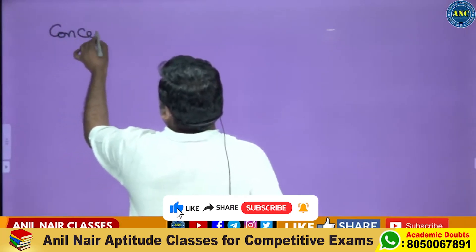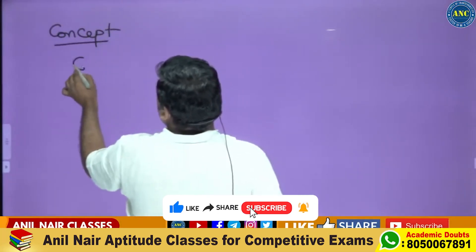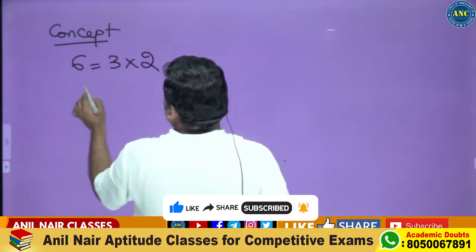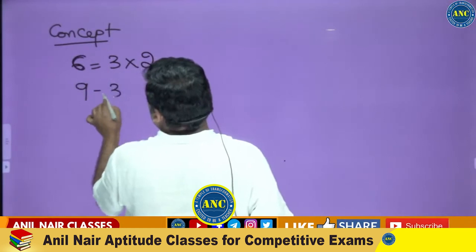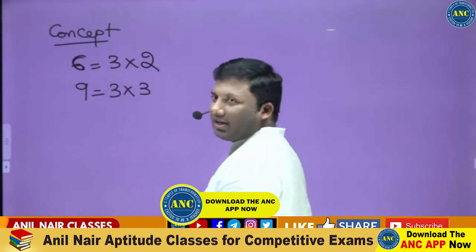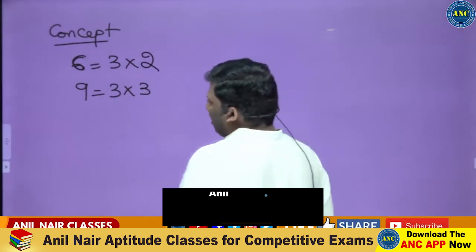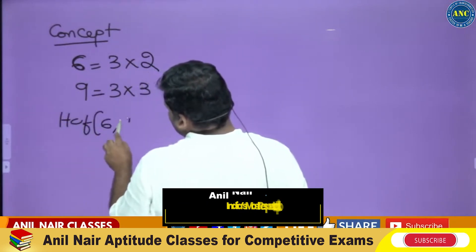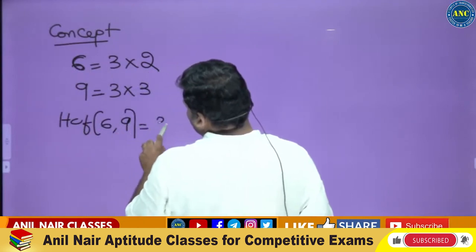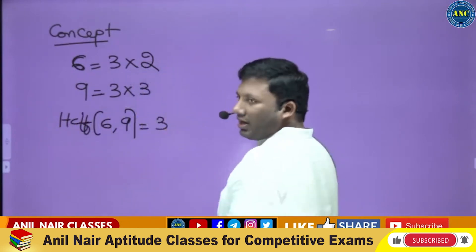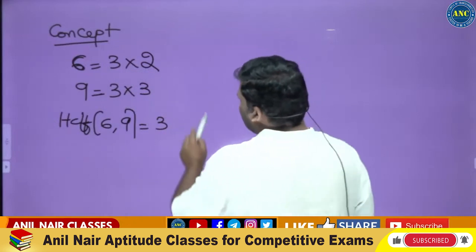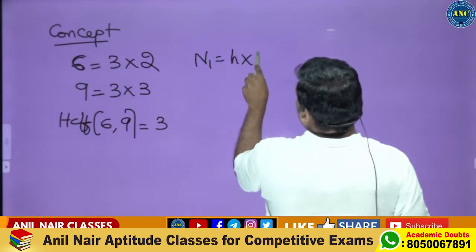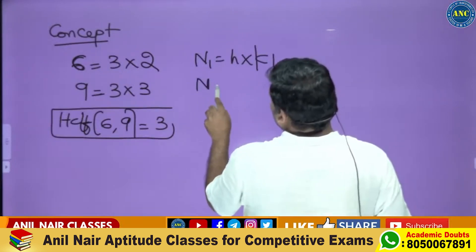Consider this concept: 6 can be written as 3 into 2, and 9 can be written as 3 into 3. So the HCF of 6 and 9 is 3. This means any two numbers can be written as h·k1 and h·k2.